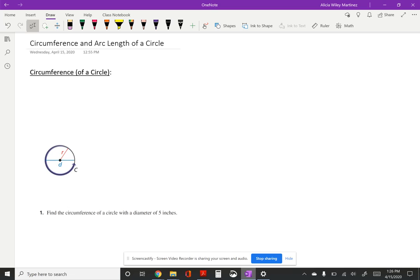So to begin let's talk about what a circumference is and then we'll get into some example problems as well. So the circumference of a circle is the distance around the circle.